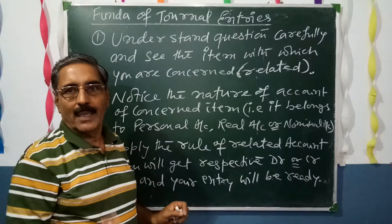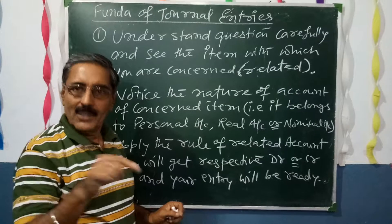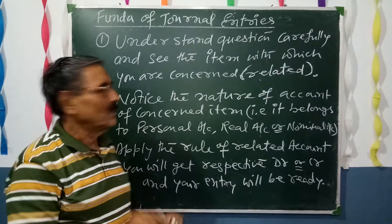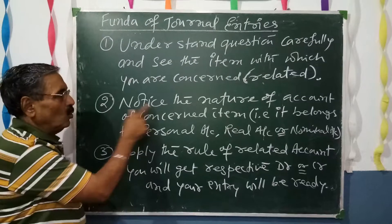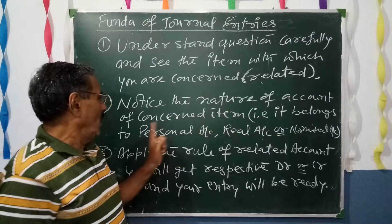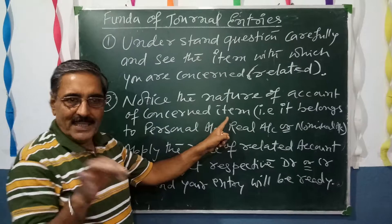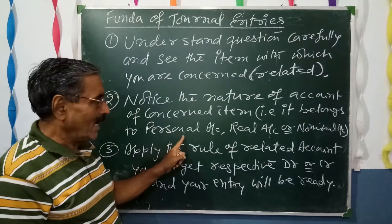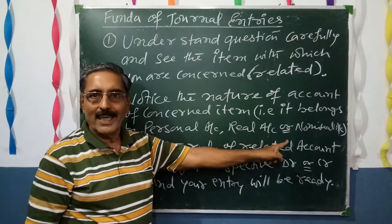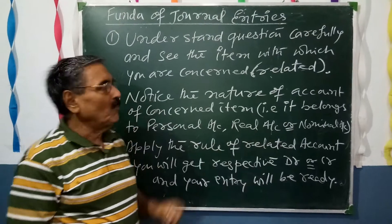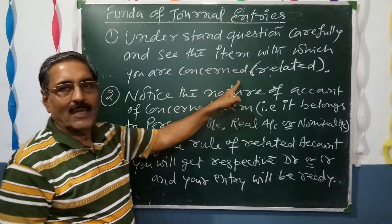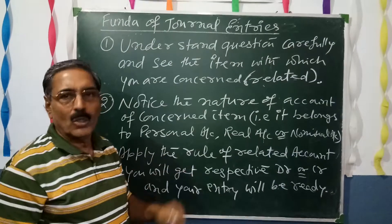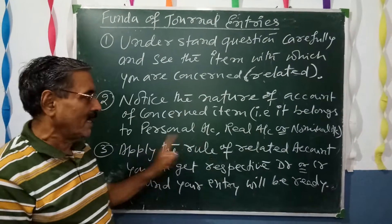For example, 'salary paid to Mohan' — you are not concerned with Mohan; rather you are related with salary, and if paid in cash, you are related with cash. Secondly, notice the nature of account of the concerned item — whether it is a personal account, real account, or nominal account.